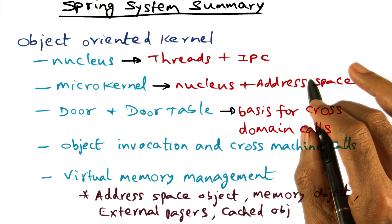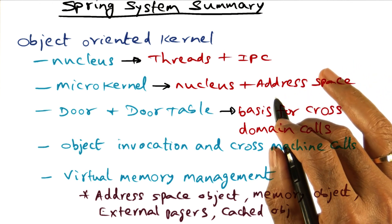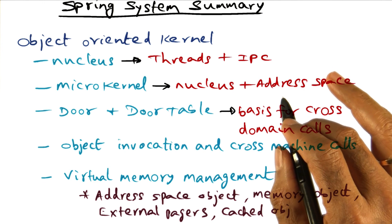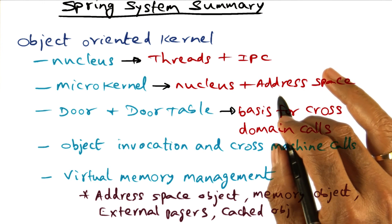Whereas, in the Spring system, object technology permeates the entire operating system design in that it is used as a system structuring mechanism, not as just an optimization mechanism in constructing a network operating system.